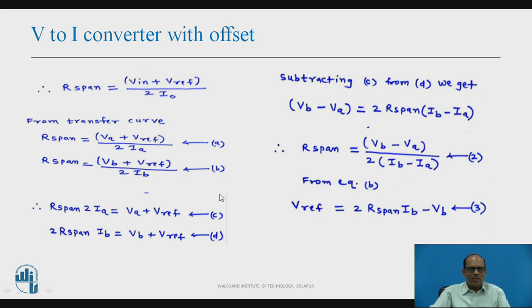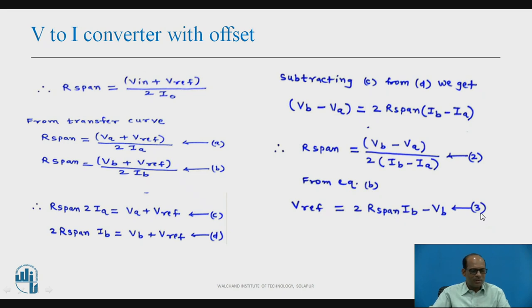From equation B, we can obtain the value of φ_reference. Solving equation B, we get φ_reference = 2 × R_span × I_B − φ_B. This is equation 3.